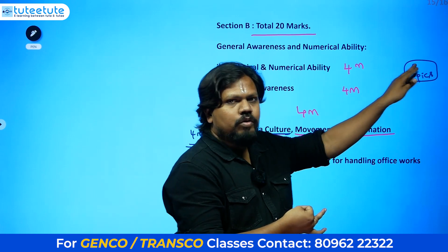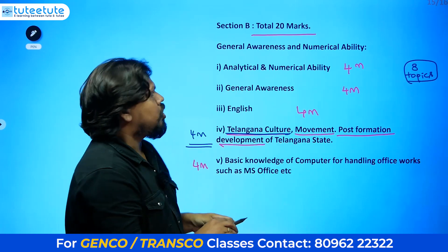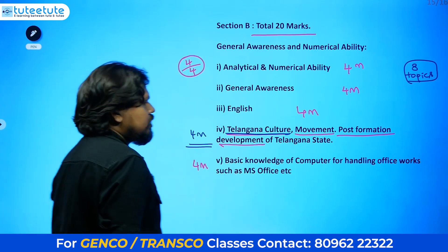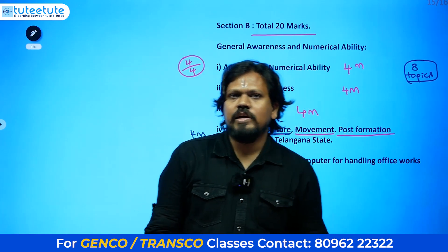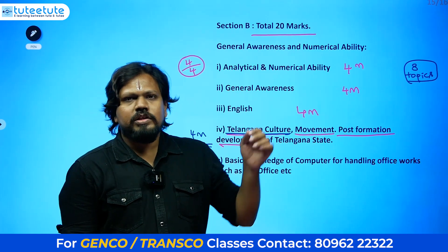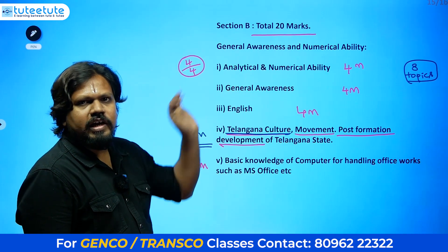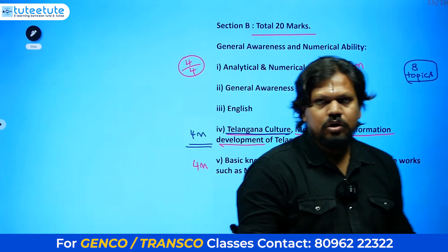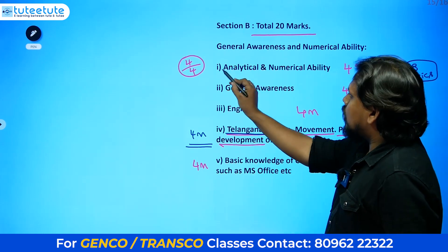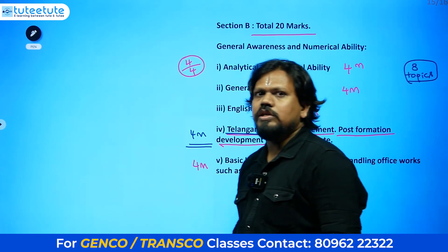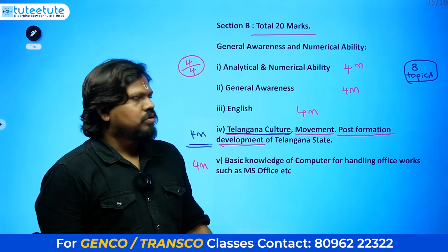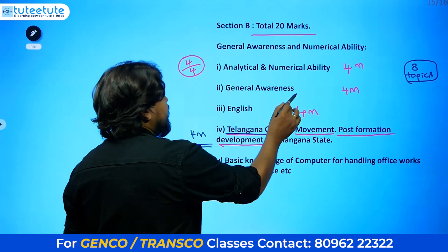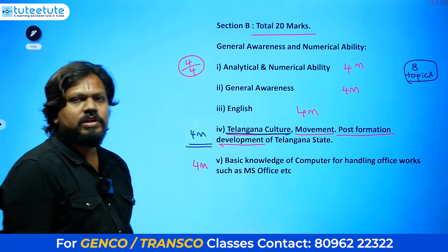Out of the 4 questions in Analytical and Numerical Ability, you need to answer all four. I have written most of these examinations before. In these 4 marks you might waste time if you don't practice shortcuts, but if you solve the questions properly you will definitely get the answer. You need to get 4 out of 4 from this section.